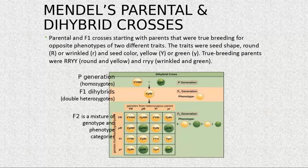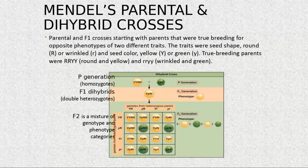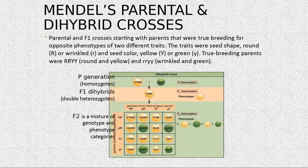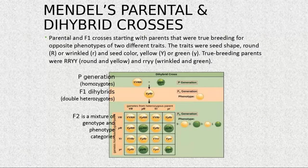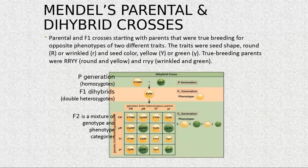Before summarizing Mendel's five-element model, we have an important concept. An individual with a dominant phenotype could be either homozygous or heterozygous for that trait. How do we determine the genotype? Mendel came up with the test cross — you take an individual with the dominant phenotype and cross it with the homozygous recessive. This is called a test cross.